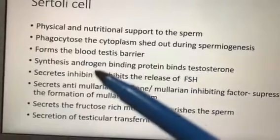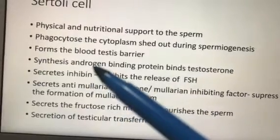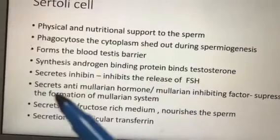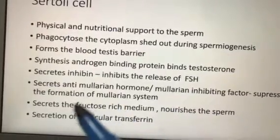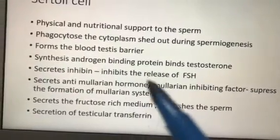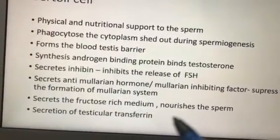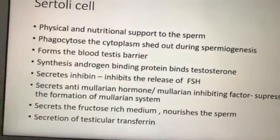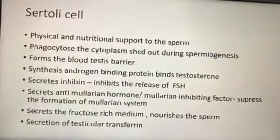Fourth, Sertoli cells synthesize androgen-binding protein (ABP), which binds testosterone — without it, testosterone would be excreted in the urine. Fifth, they secrete inhibin, which inhibits the release of FSH. Sixth, they secrete anti-Müllerian hormone, which suppresses the formation of the Müllerian system (which develops in the female reproductive system). Seventh, they secrete a fructose-rich medium for sperm nourishment and testicular transferrin, an iron-carrying nutritional product transmitted to spermatozoa.